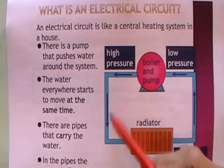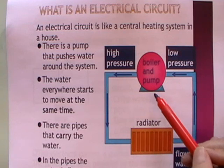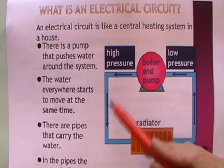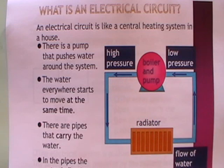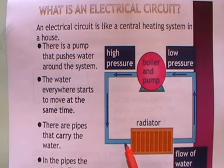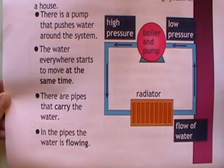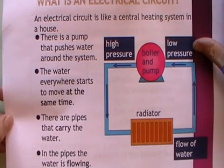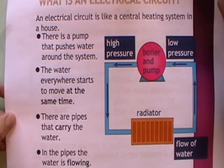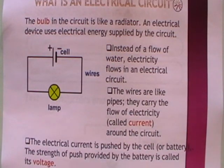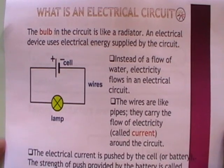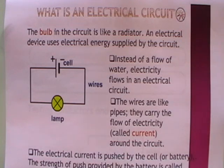The water everywhere starts to move at the same time. Once the pump starts, it pushes all the water around — all the water pushes the water in front of it all around at the same time. There are pipes which carry the water to different branches or parts of the house, and they flow through the radiators, heating the radiator up, which heats your house. In the pipes the water is moving or flowing, and we say this is an analogy to what happens in an electrical circuit. In this electrical circuit you have a bulb, and the bulb is like the radiator.